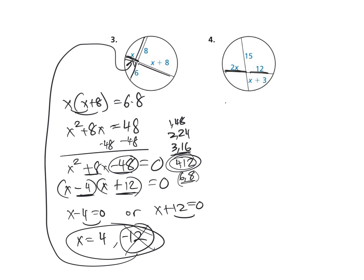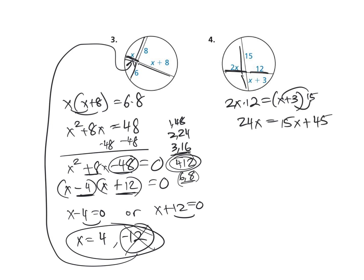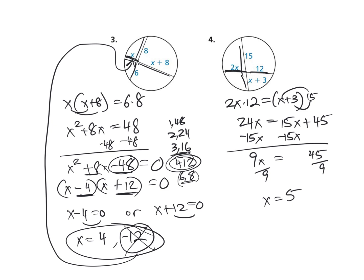Number 4: 2X times 12 equals the group X plus 3 times 15. So 24X on the left, 15X plus 45 on the right. Subtract 15X: 9X equals 45. Divide by 9, and X equals 5.